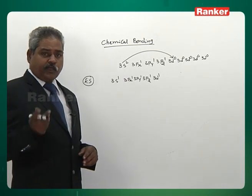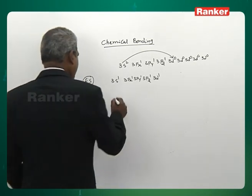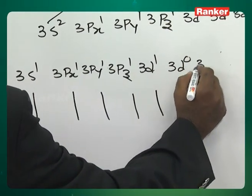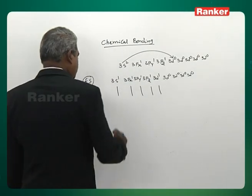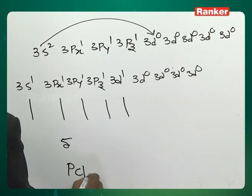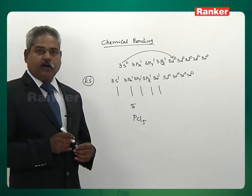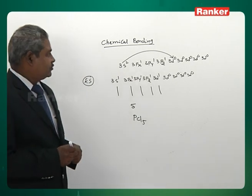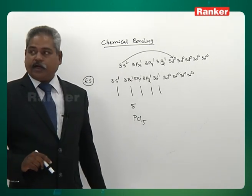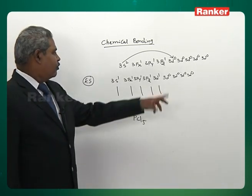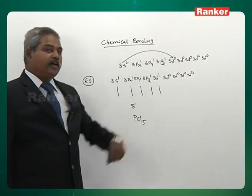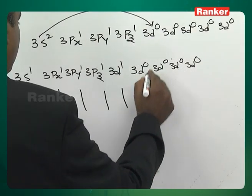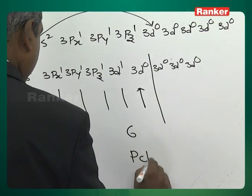Phosphorus-chlorine bond formation: in its excited state phosphorus has five unpaired electrons forming five bonds (PCl5) and there are still vacant 3d orbitals. If someone offers a pair of electrons, phosphorus accepts and forms six bonds, as in PCl6⁻. Phosphorus can form three, four, five, or six bonds depending on its state.